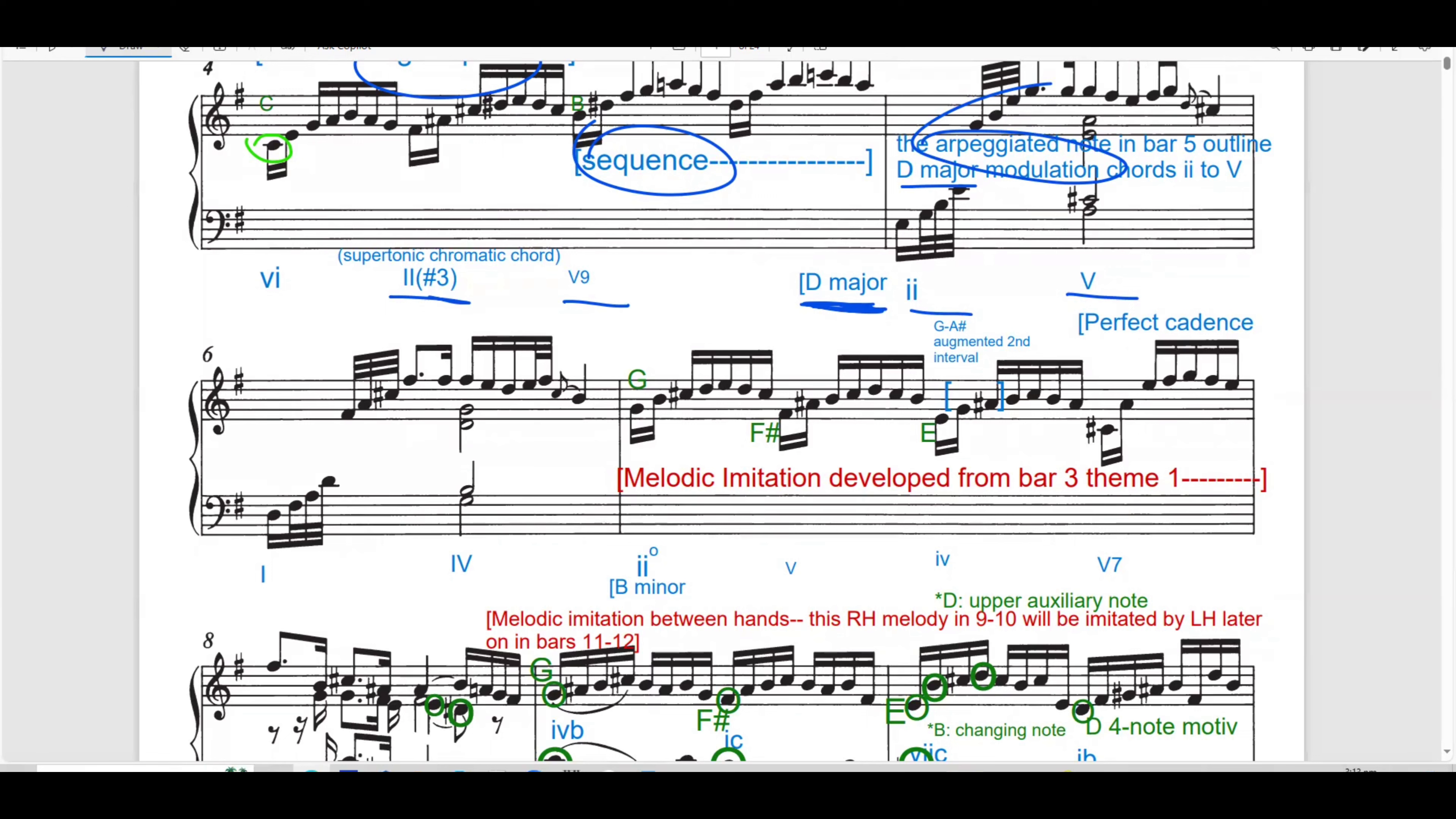So, this outlines the chord progression 2 to 5. This modulation marks a temporary shift away from E minor into major mode, creating contrast and bringing brightness into the passage. The phrase concludes with a perfect cadence in D major. So there is a 5, 1, then after that it translates to 4 again.